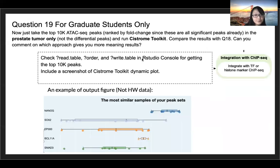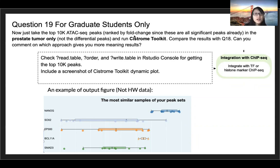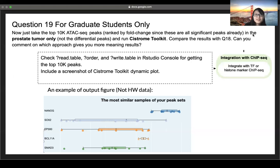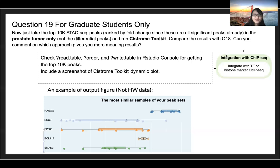In question 19, take the top 10k ATAC-seq peaks by fold change. The file we provide likely already contains the score and fold change in the original BED file. You can read this table in R, choose the top 10k peaks, and run CISTROME Toolkit again. The output will be a dynamic figure. Then compare it with question 18 — question 18 finds differential peaks in tumor versus normal while this one is tumor only. Give us your thoughts on which method gives more meaningful results; it's a free response.